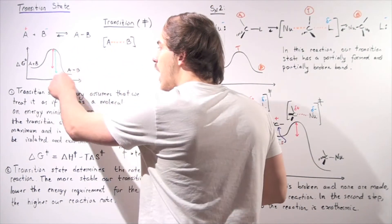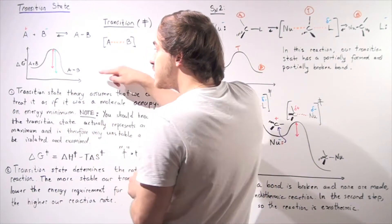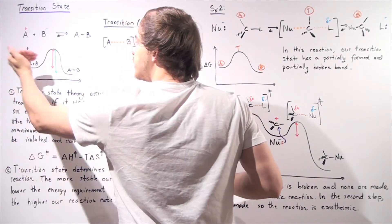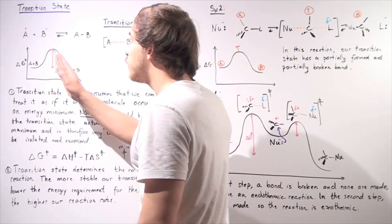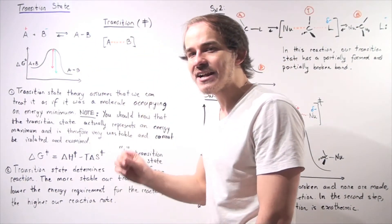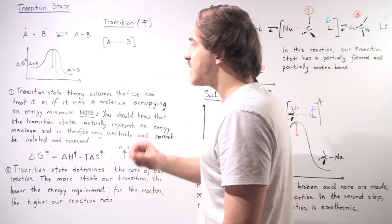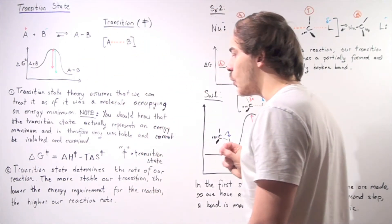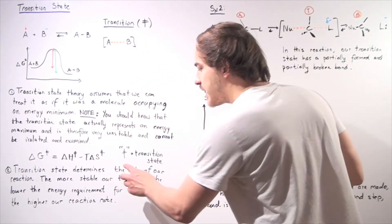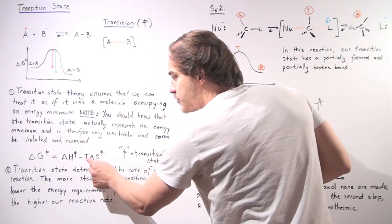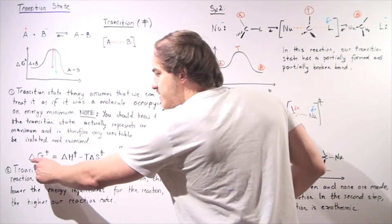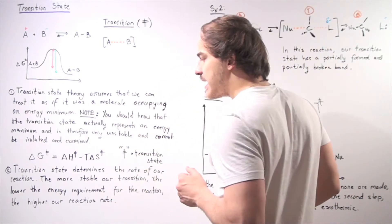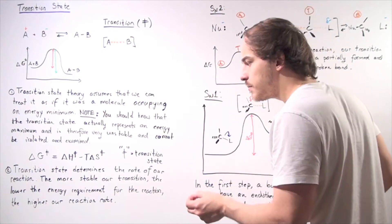The larger reverse activation energy means our products are more stable than our reactants. For both the forward and reverse reactions, we have the same exact transition state, but the amount of energy required to traverse this barrier is different. The double-dagger symbol on ΔG, ΔH, and ΔS represents the transition state. So the change in Gibbs free energy of activation equals change in enthalpy of activation minus temperature times change in entropy of activation: ΔG‡ = ΔH‡ − TΔS‡.